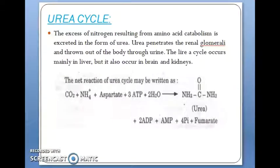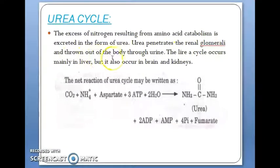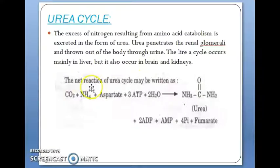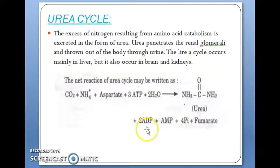Now we study the urea cycle. The excess nitrogen resulting from amino acid catabolism is excreted in the form of urea. Urea passes through the renal glomeruli and is excreted from the body through urine. The urea cycle occurs mainly in the liver but also in the brain and kidney. The net reaction of the urea cycle is: carbon dioxide and ammonia plus aspartate and three molecules of ATP and two molecules of water are converted into urea, two molecules of ADP, AMP, phosphate groups, and fumarate.